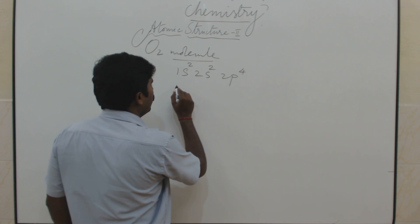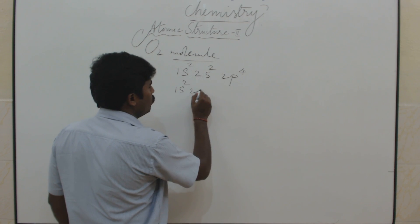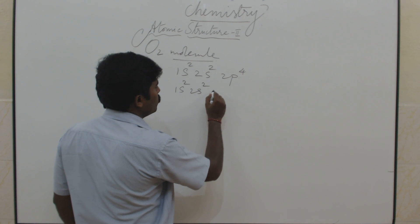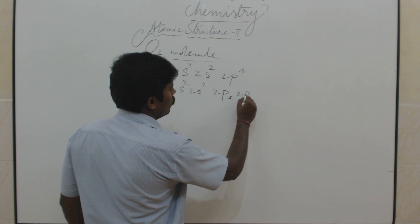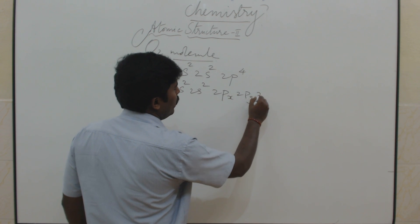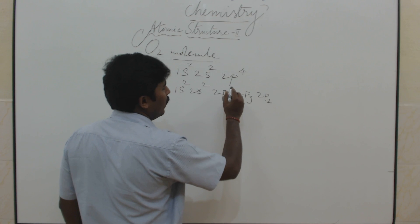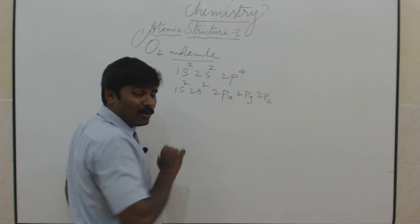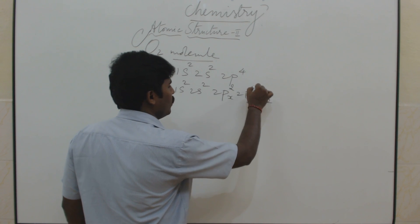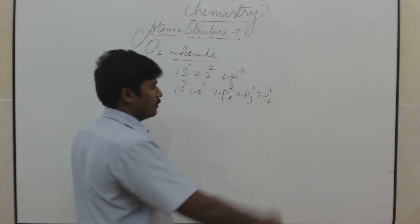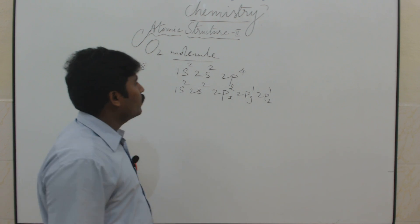2p4 means how to write: 1s2, 2s2, then 2px, 2py, 2pz. Here the x orbital has 2 electrons, and y and z each have 1 electron.